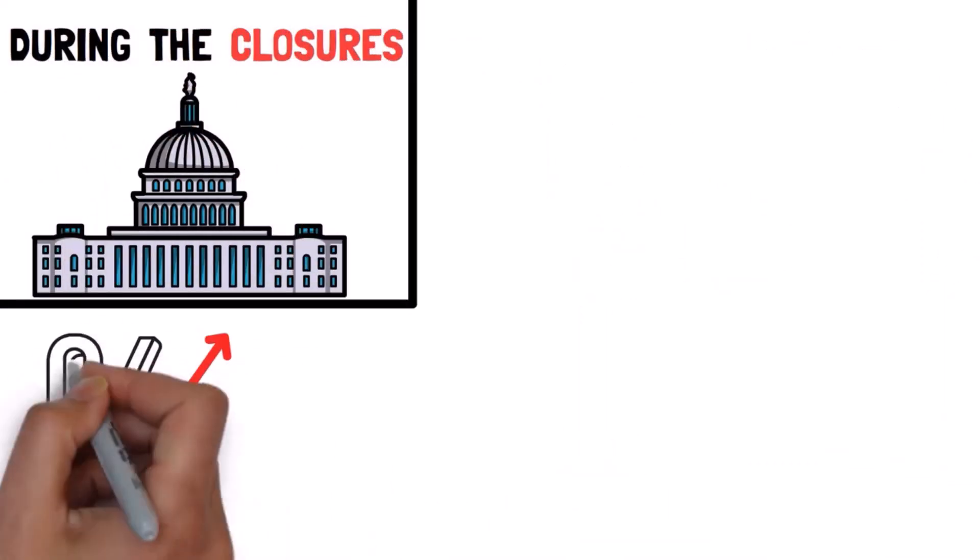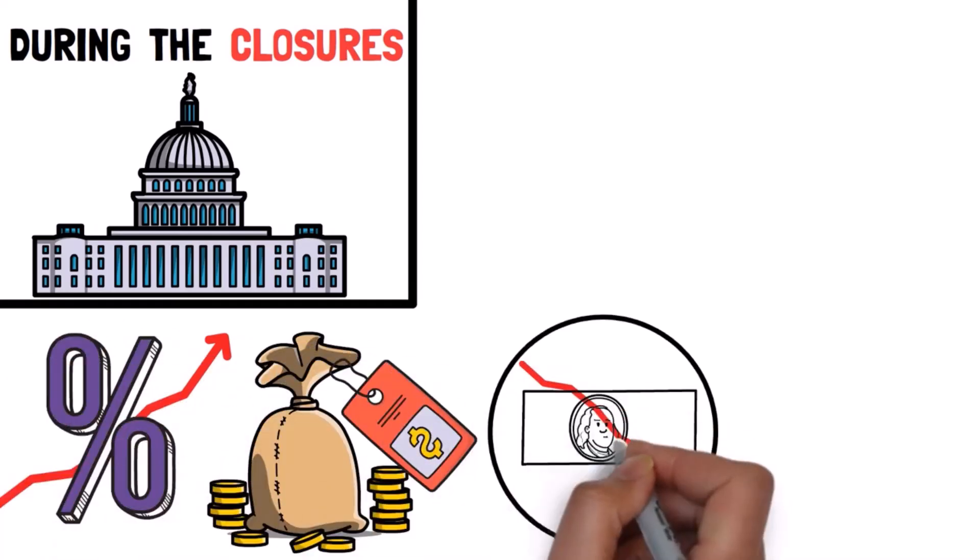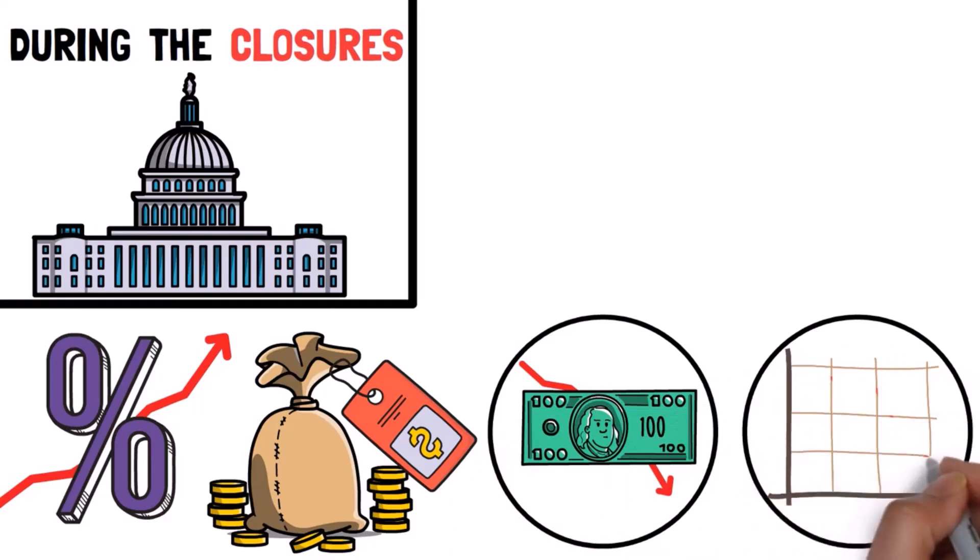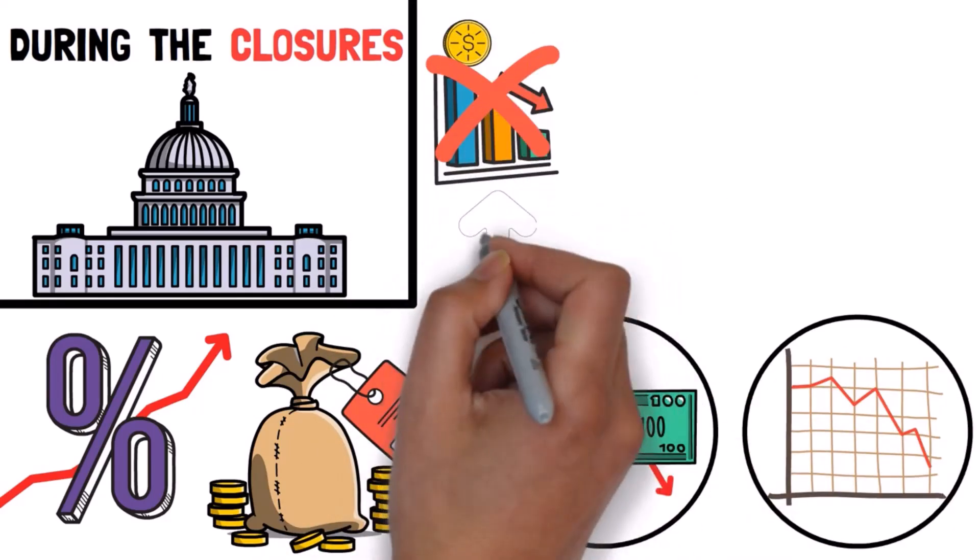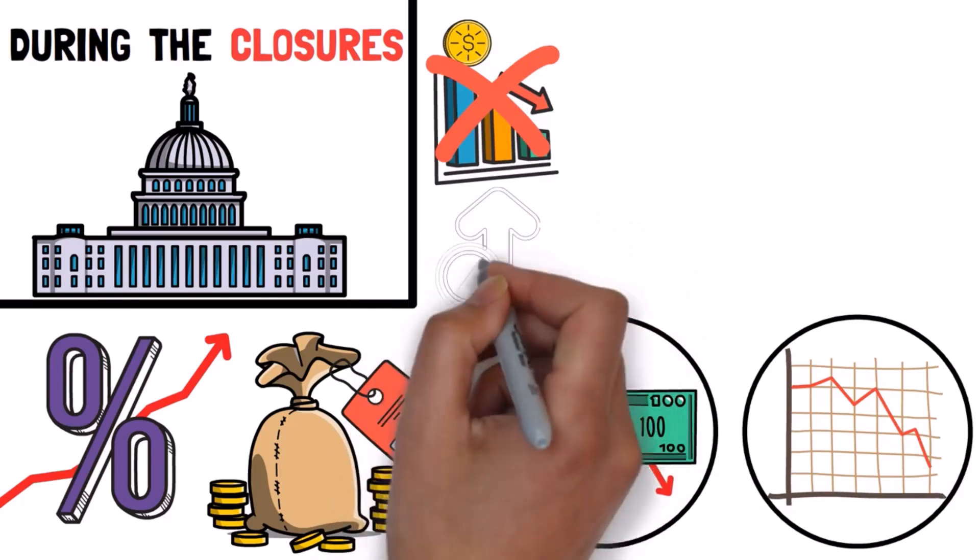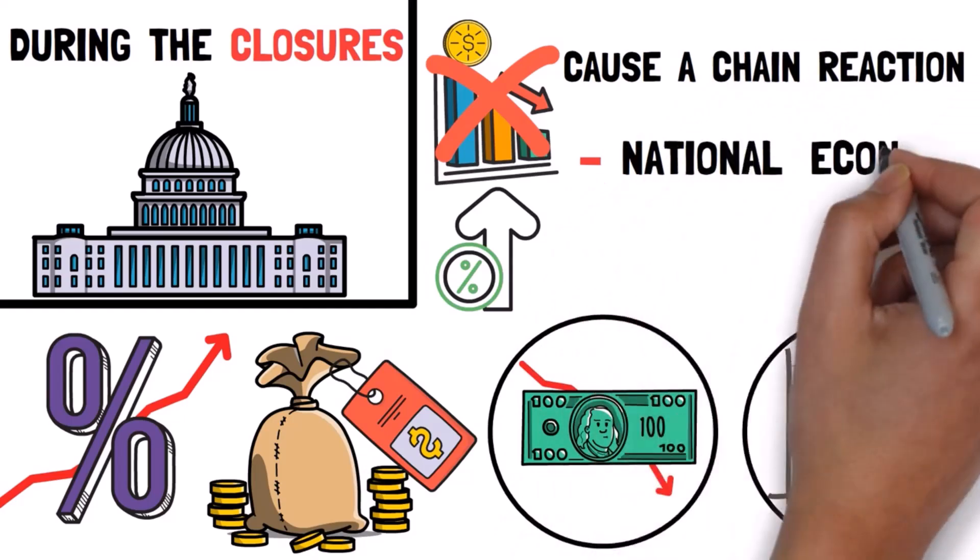Raising interest rates, on the other hand, makes borrowing money more expensive, reduces spending, and slows down the economy. But if the economy is not ready for a change, increasing interest rates too quickly could cause a chain reaction in the national and global economy.